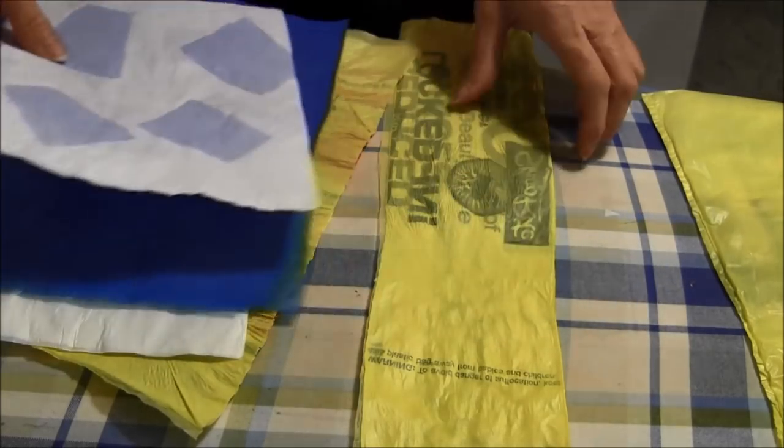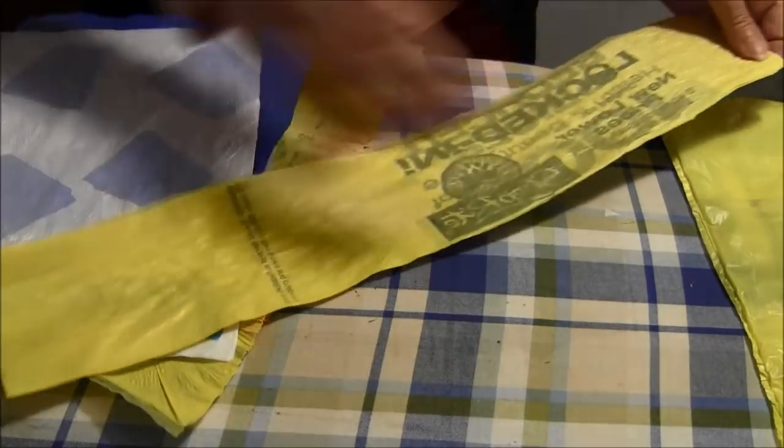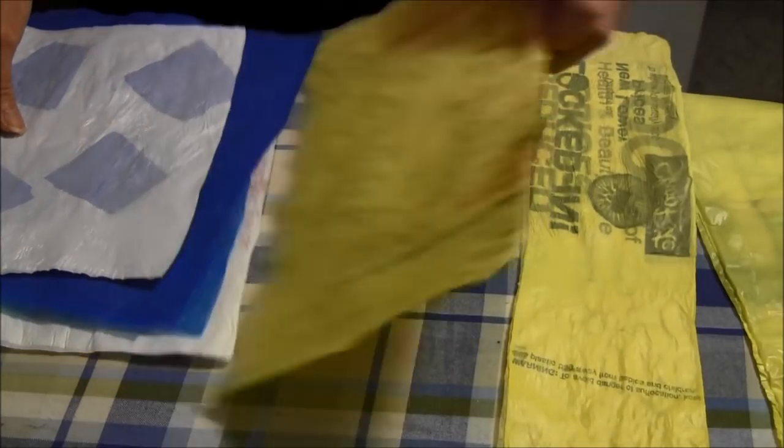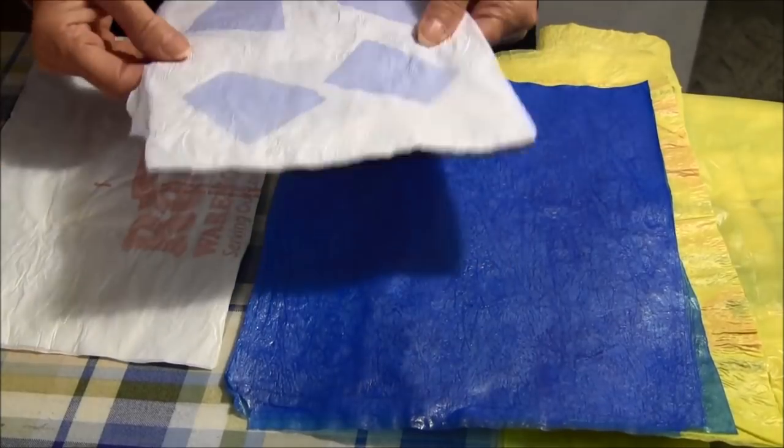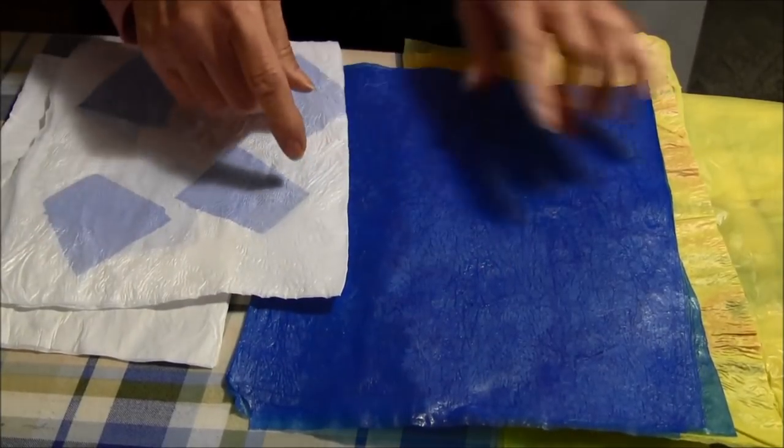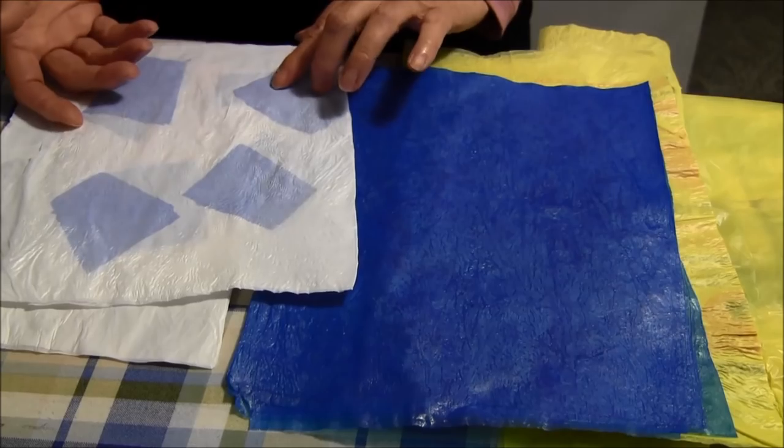Here are a few examples of what I've done. This is yellow heading in that direction. Here I used a newspaper bag. This I used just some white and I used part of the newspaper bag to make a little design in it.